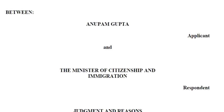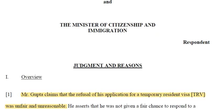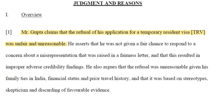The case involves Anupam Gupta and the Minister of Citizenship and Immigration. Mr. Gupta claims the refusal of his TRV — a visitor visa — was unfair and unreasonable. He asserts he was not given a fair chance to respond to a misrepresentation concern and that this resulted in improper adverse credibility findings. He also argues the refusal was unreasonable given his family ties to India, financial status, prior travel history, and that it was based on stereotypes and discarding of favorable evidence.